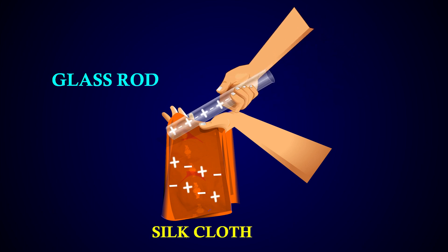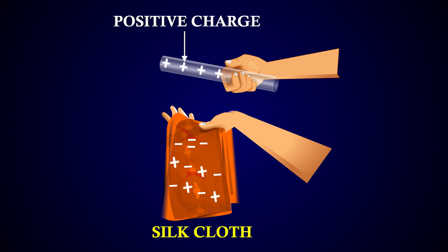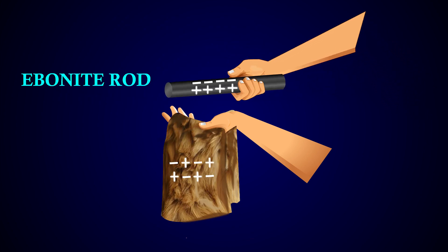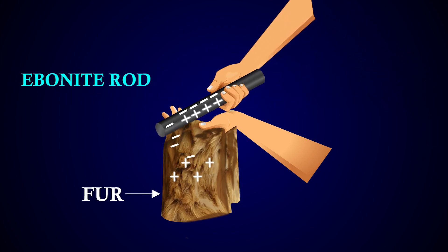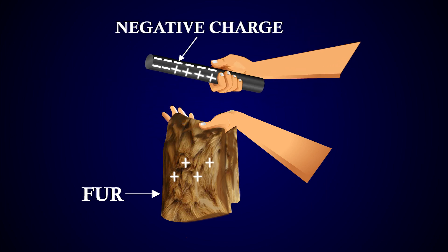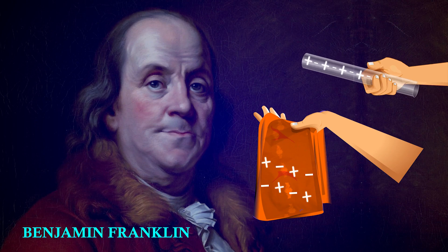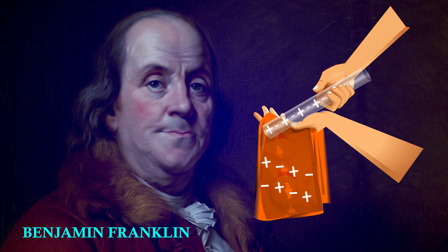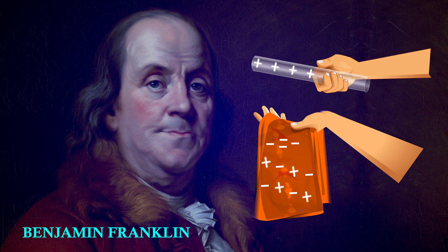If a glass rod is rubbed with a silk cloth, it acquires positive charge, while the silk cloth acquires an equal amount of negative charge. If an ebonite rod is rubbed with fur, it becomes negatively charged, while the fur acquires an equal amount of positive charge. This classification of positive and negative charges was termed by American scientist Benjamin Franklin.